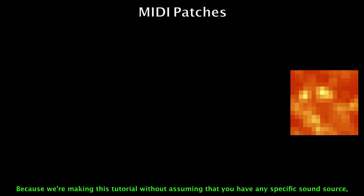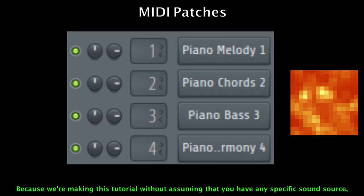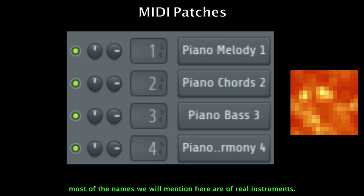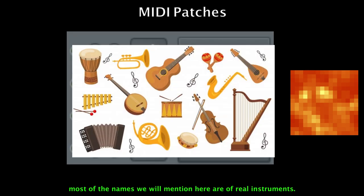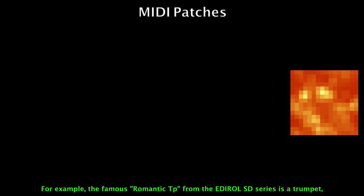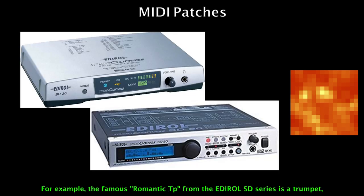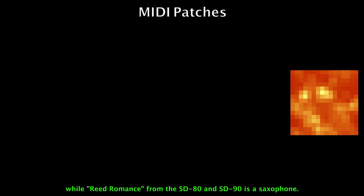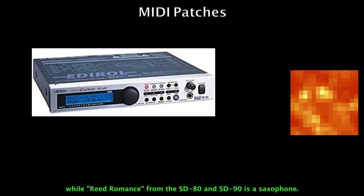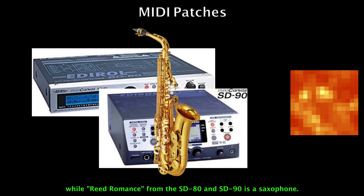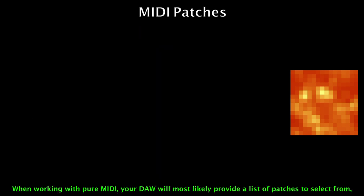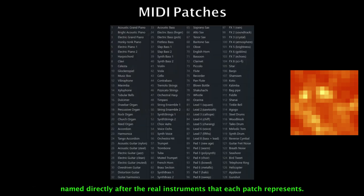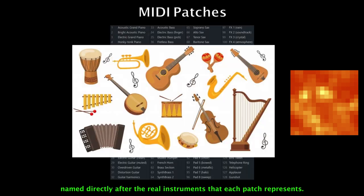Because we're making this tutorial without assuming that you have any specific sound source, most of the names we will mention here are real instruments. For example, the famous Romantic Tipi from the Aero SD series is a trumpet, while Reed Morance from the SD80 and SD90 is a saxophone. When working with MIDI, your DAW will most likely provide a list of patches to select from, named directly after the real instruments that each patch represents.